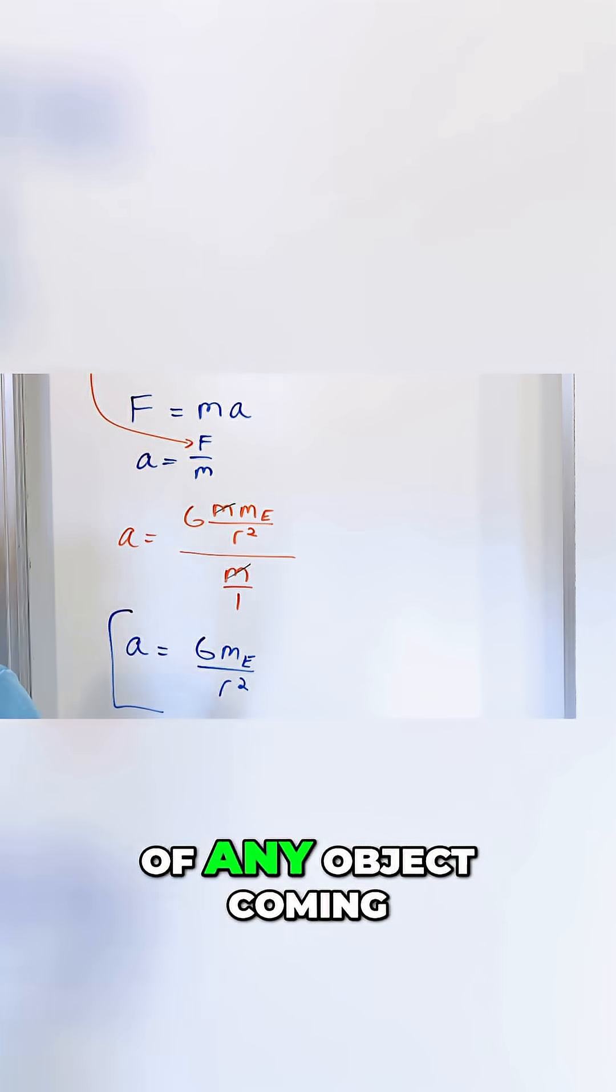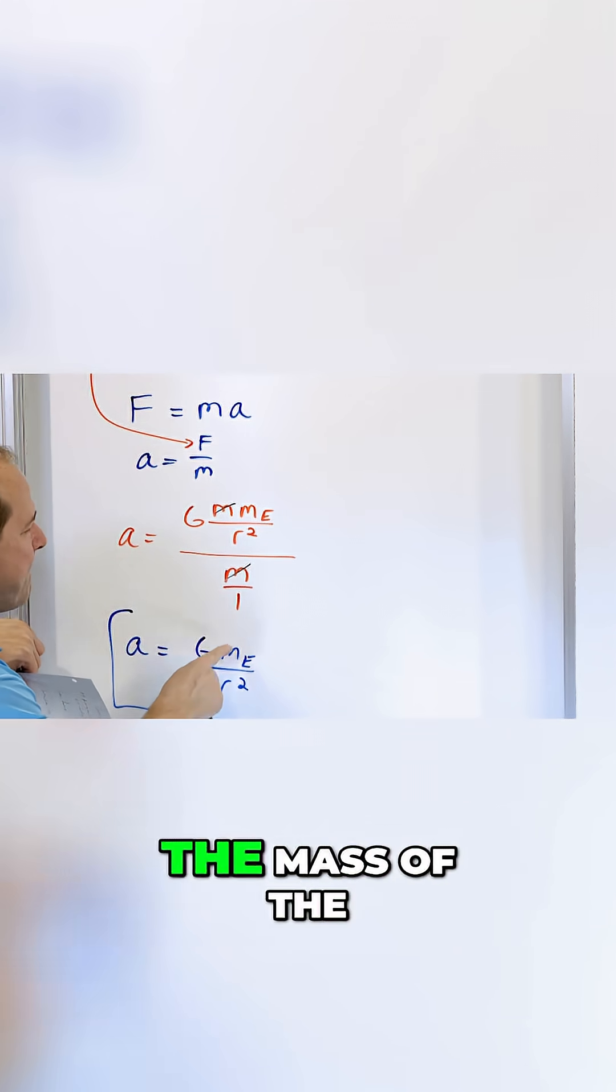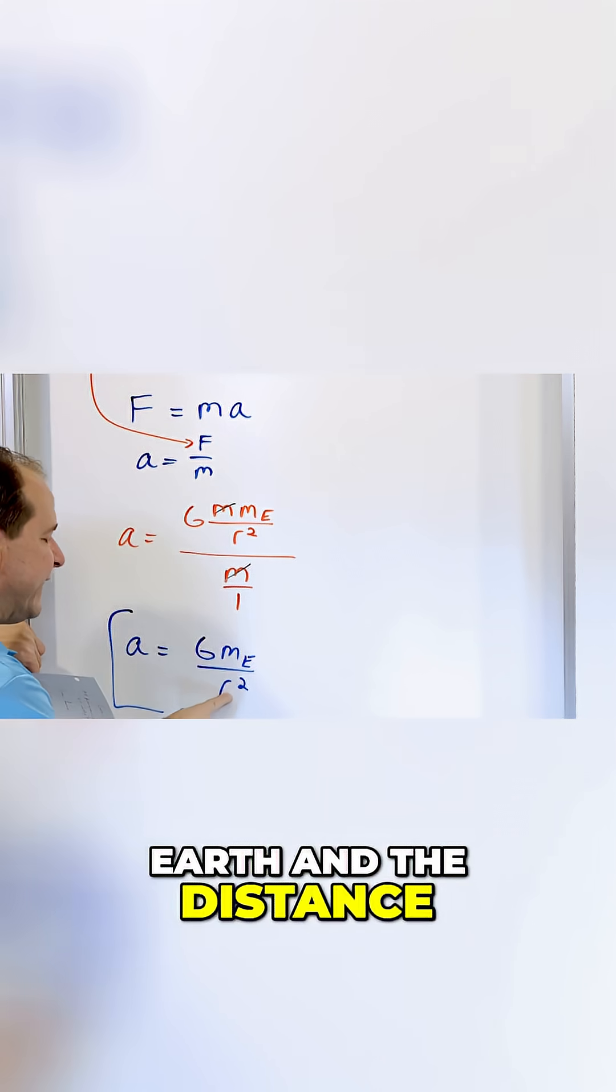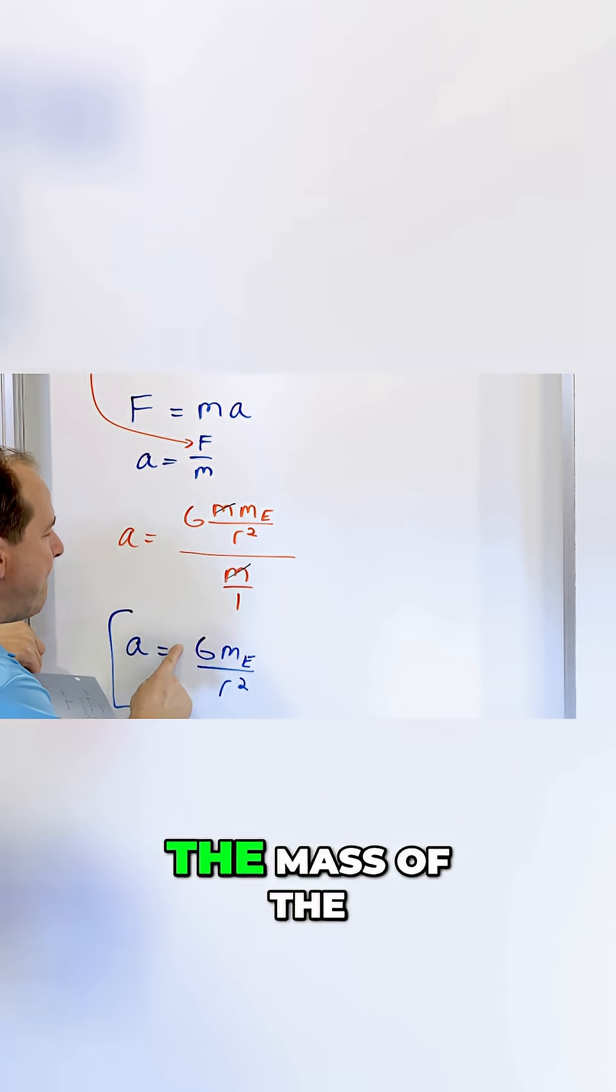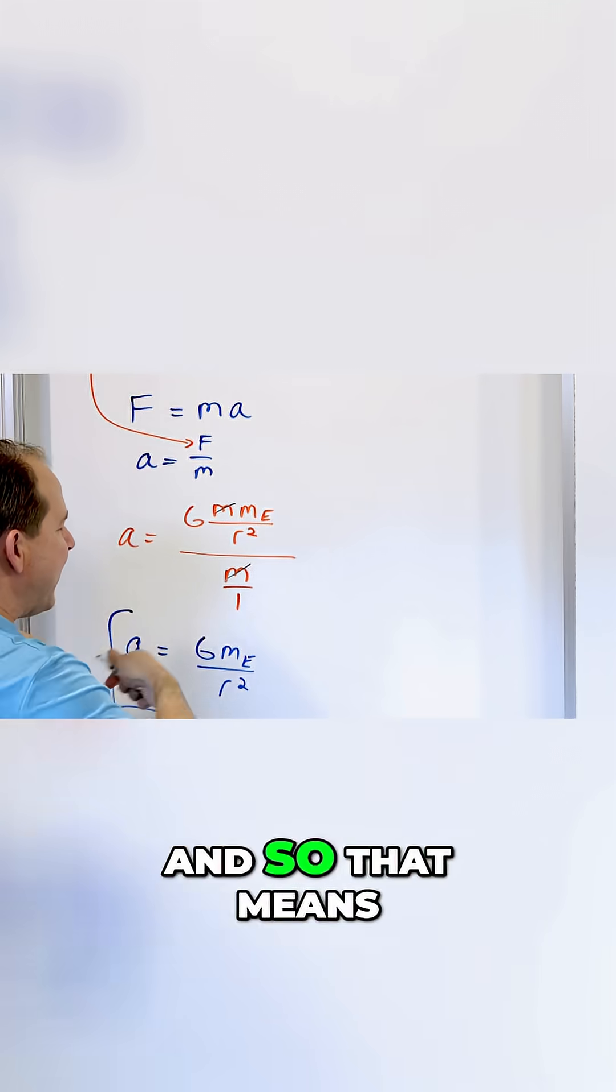So what we're saying is that the acceleration of any object coming down only depends on the mass of the earth and the distance it is from the center of the earth. The mass of the object is not in here at all.